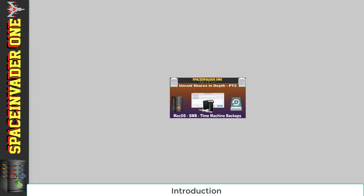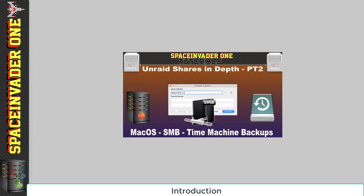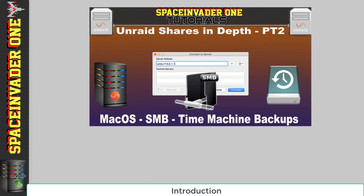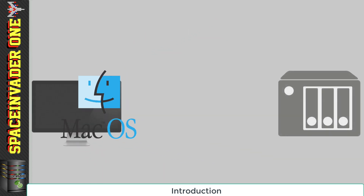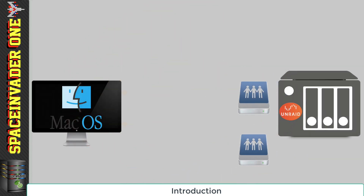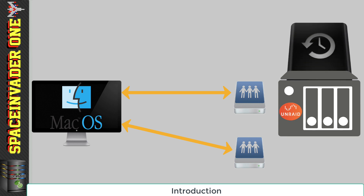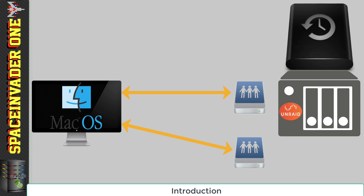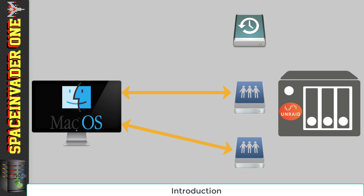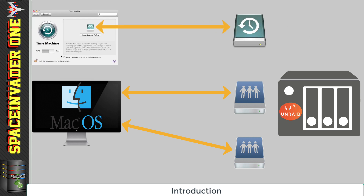Welcome to part 2 of the series about using Unraid Shares. This part is mainly for Apple Mac users. We're going to look at setting up shares and how to access those shares from Mac OS, as well as some tips and tweaks to improve our user experience. Having an Unraid server with a whole load of storage is obviously a great destination for backups, so we'll be looking at creating a share for Apple Time Machine backups.